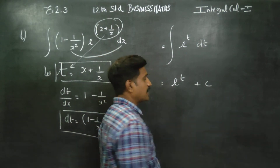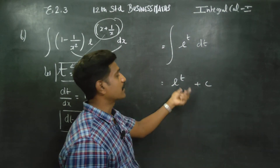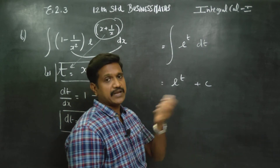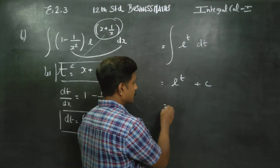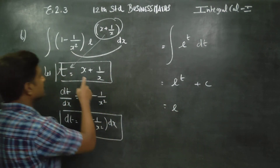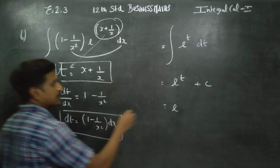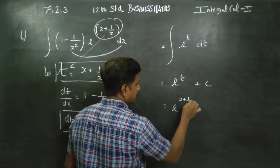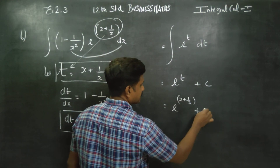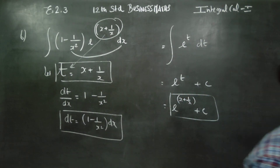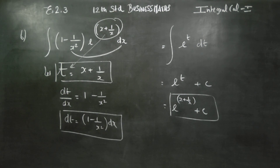Plus C. Now we substitute back. Since t is equal to x plus 1 by x, substituting t back gives us e to the power of x plus 1 by x plus C. That is the final answer. This method is called the substitution method.